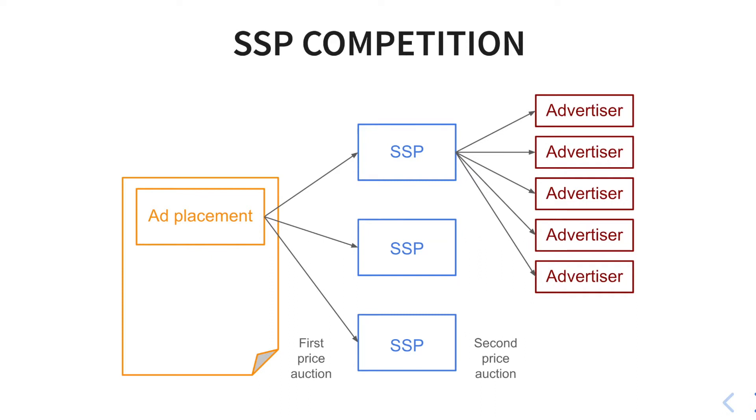What you may not know is that a recent trend in ad tech is to call several SSPs and organize a secondary auction among them. This organization is called the header bidding.